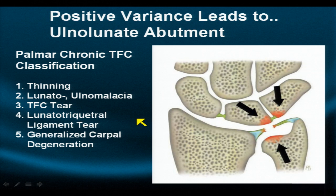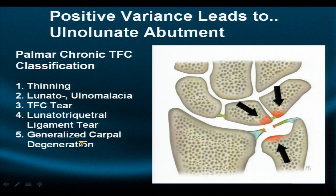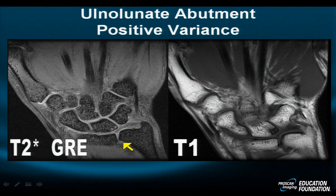The stages include: thinning of the TFC (IIA), chondromalacia (IIB), triangular fibrocartilage tear (IIC), lunatotriquetral ligament tear (IID), and advanced degeneration of the carpal bones (IIE).